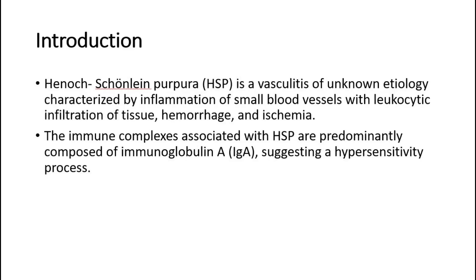Henoch-Schönlein Purpura, HSP, is a vasculitis of unknown etiology, characterized by inflammation of small blood vessels with leukocytic infiltration of tissue, hemorrhage, and ischemia. The immune complexes associated with HSP are predominantly composed of immunoglobulin A, suggesting a hypersensitivity process.